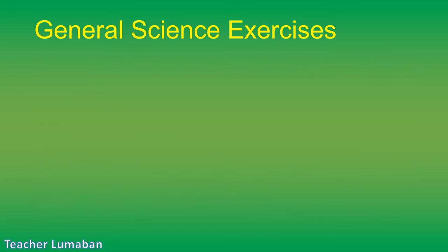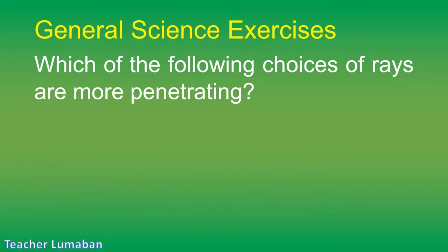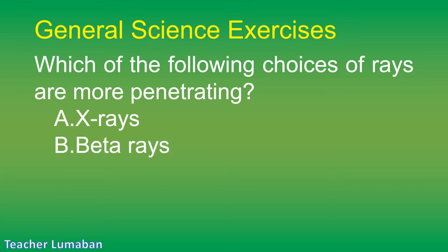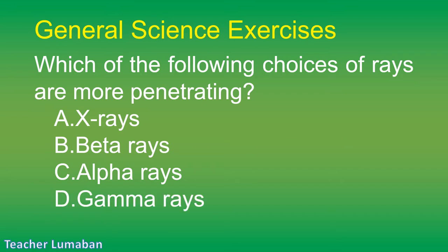Which of the following rays are more penetrating? Letter A: X-rays. Letter B: beta rays. Letter C: alpha rays. Letter D: gamma rays.